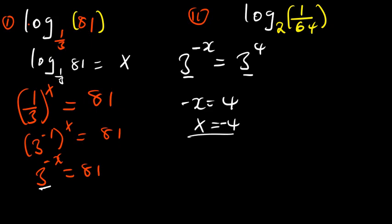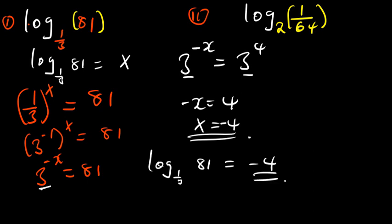So, the exact value of log base 1 over 3 of 81 is negative 4. And if I convert this back to exponential, this is going to be true: 1 over 3 raised to the power negative 4 is equal to 81, which is true. That's the basic idea behind this question.